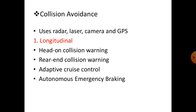First we discuss longitudinal collision avoidance, which includes head-on collision warning, rear collision warning, adaptive cruise control, and autonomous emergency braking. In a head-on collision warning, when any vehicle is traveling on the road and there is any obstruction in front, a warning is given to the driver by lights or sound.